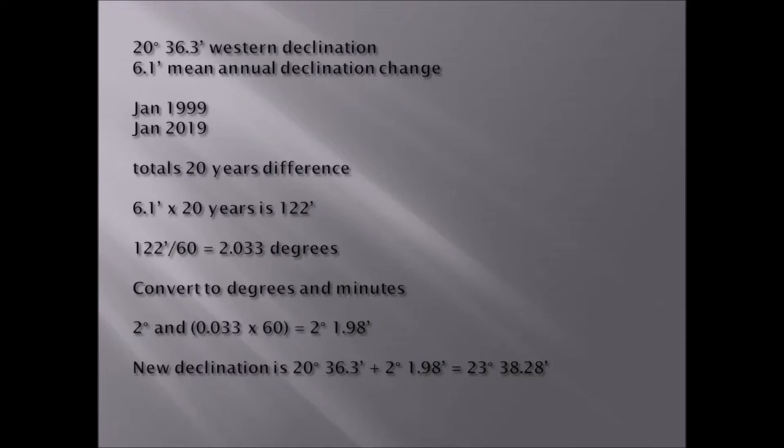122 minutes divided by 60 gives you 2.033 degrees. If you want to convert the degrees in decimals to degrees and minutes, you must multiply 0.033 by 60, that gives you 2 degrees and 1.98 minutes. New declination is therefore 20 degrees 36.3 minutes plus 2 degrees 1.98 minutes, and that gives you a total of 23 degrees 38.28 minutes, which is your declination for the present time.